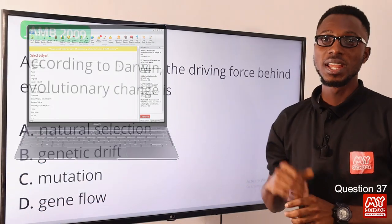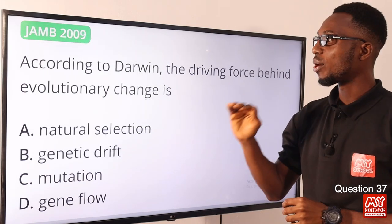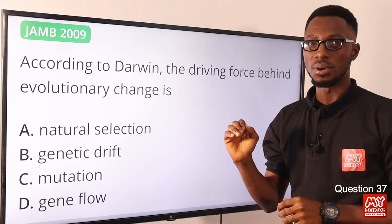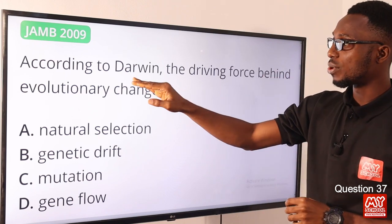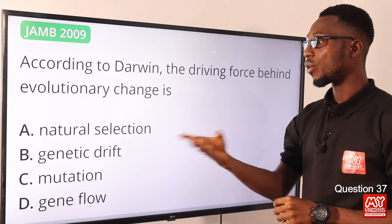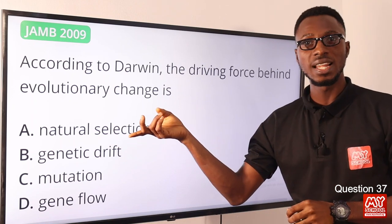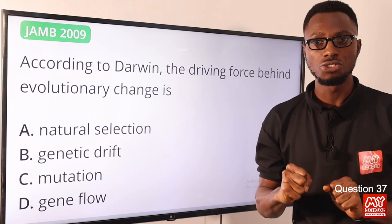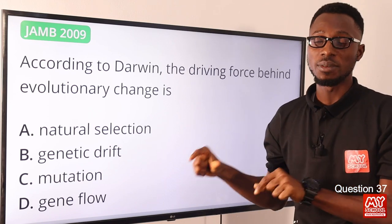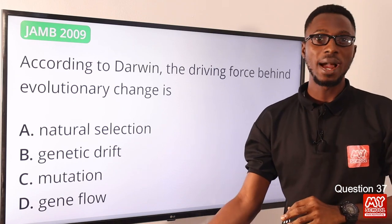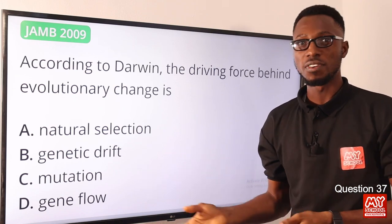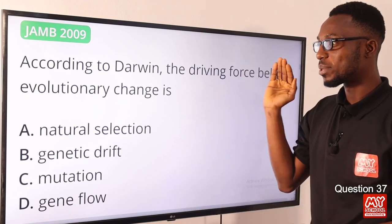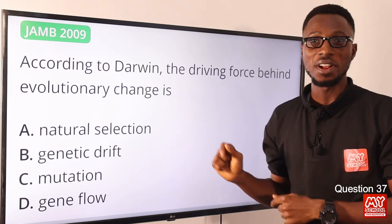Question 37: According to Darwin, the driving force behind evolutionary change is natural selection. Charles Darwin in the 19th century proposed natural selection and the concept of survival of the fittest, driven by environmental pressure. For Jean Lamarck, the theory involved use and disuse of body parts and inheritance of acquired traits. The correct option is option A for natural selection.